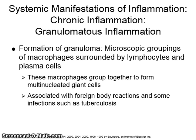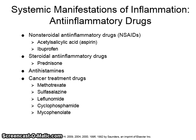Granulomatous inflammation is a distinctive form of chronic inflammation. It is characterized by the formation of granulomas, which are microscopic groupings of macrophages, usually surrounded by lymphocytes and occasional plasma cells. The macrophages within the granuloma become larger as they group together with their multiple nuclei and become multi-nucleated giant cells. Granulomatous inflammation is usually associated with foreign body reactions and some infections such as tuberculosis.